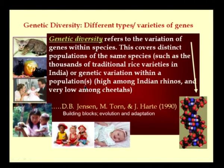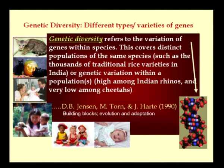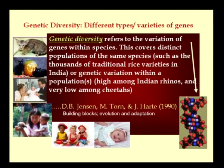Genetic variation within populations can be high, as among Indian rhinos, or very low, as among cheetahs. Genes are the building blocks. Looking at the example of cats, they are all cats but the fur and coat color vary because every gene is responsible for a particular phenotypic expression. Similarly, each baby looks very different because of the variety of genes in living organisms — every gene refers to a specific kind of functional role and is responsible for the variation existing among living organisms.